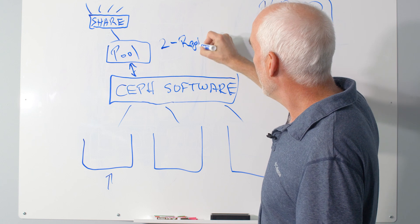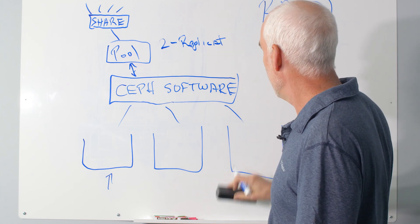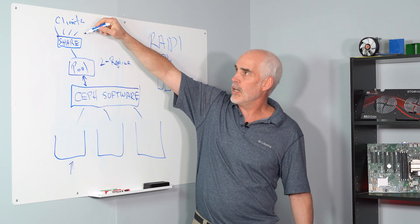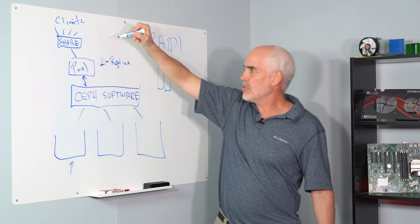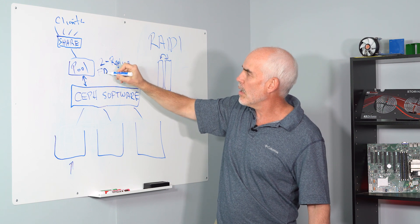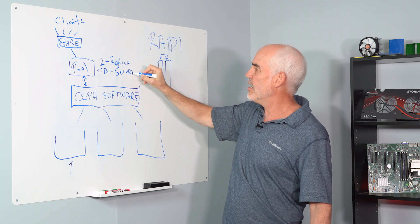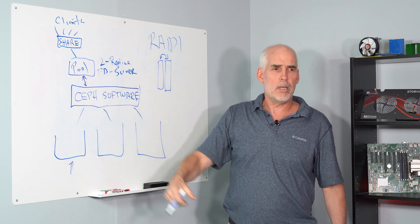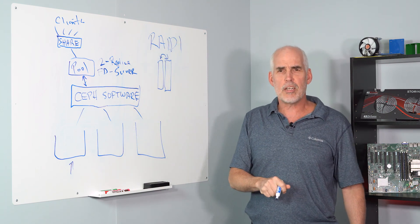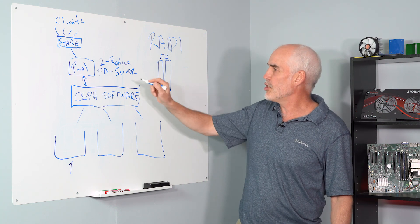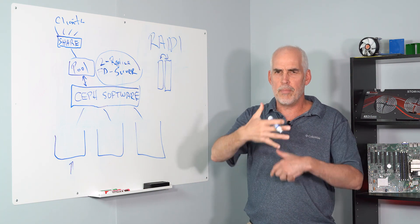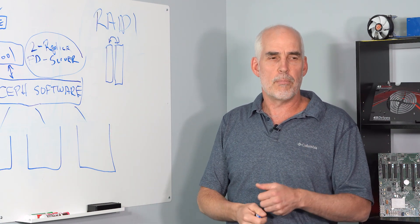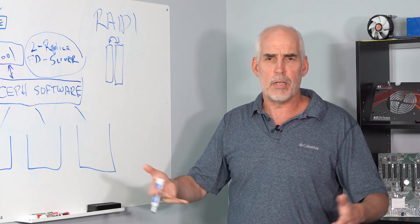So let's talk about what happens if I set up my pool in two-replica mode. In Ceph jargon: two replica, failure domain server — those are the key elements. Every time a client writes data into that pool, each file is broken into chunks. An identical copy of each chunk is created. A CRUSH rule is created that tells the Ceph engine where to place each chunk, keeps track of them, and retrieves them on read.